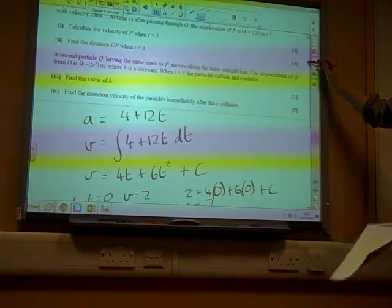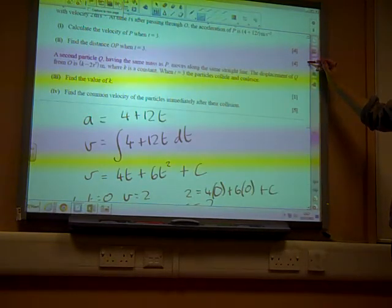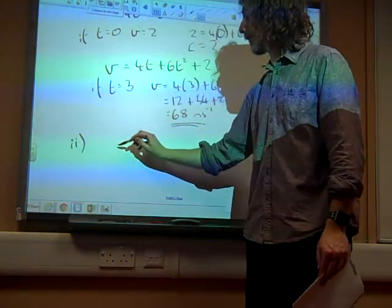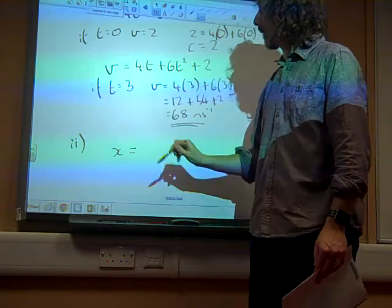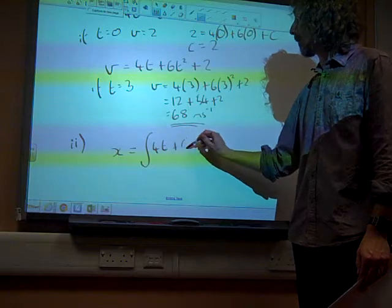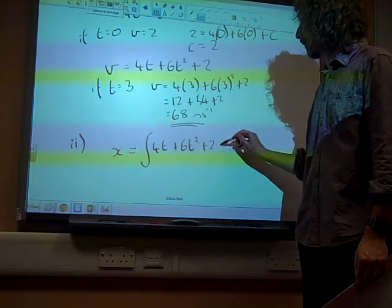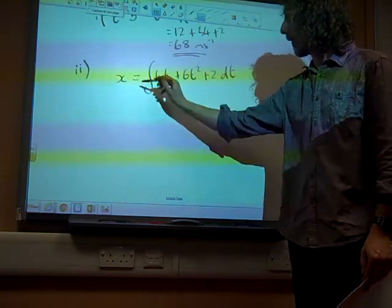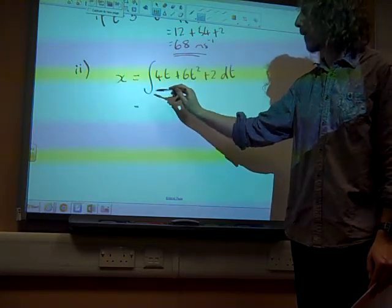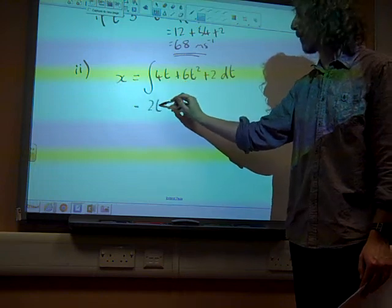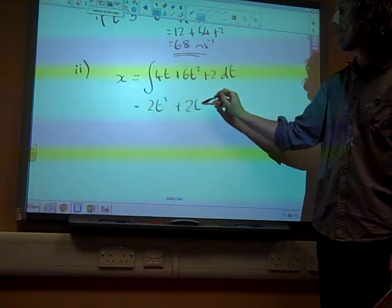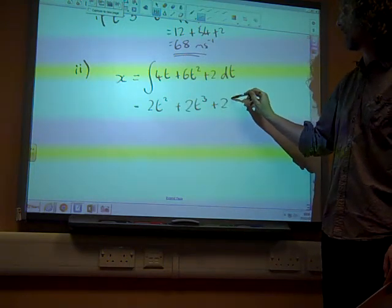Part 2. Find the distance OP when t is 3. So if that was the velocity, the distance is what we get if we integrate the velocity. So we integrate 4t plus 6t squared plus 2 dt, which gives us add 1 to the power divided by the new power, 4t squared over 2, so 2t squared, 6t cubed over 3, so 2t cubed, 2t.